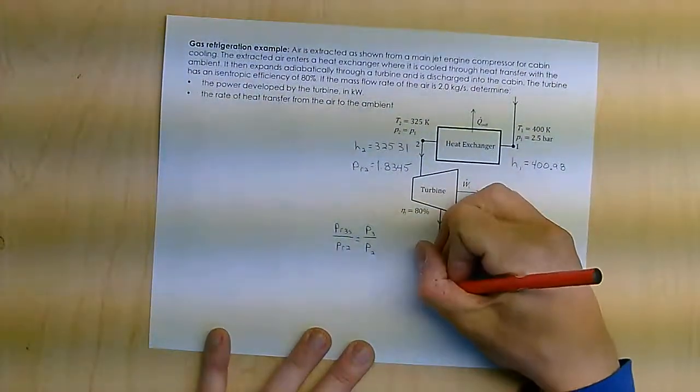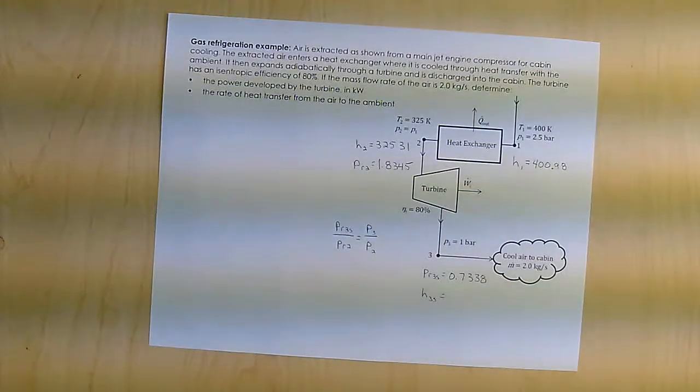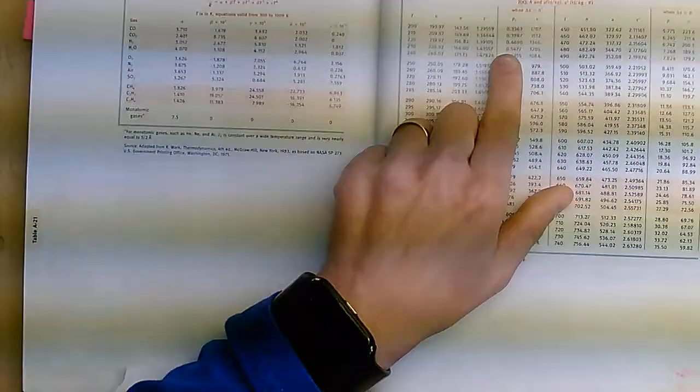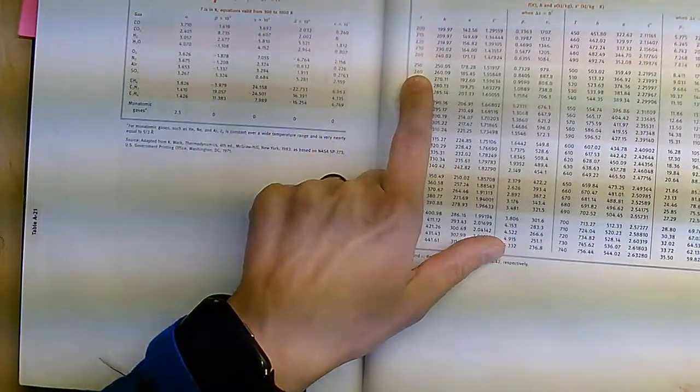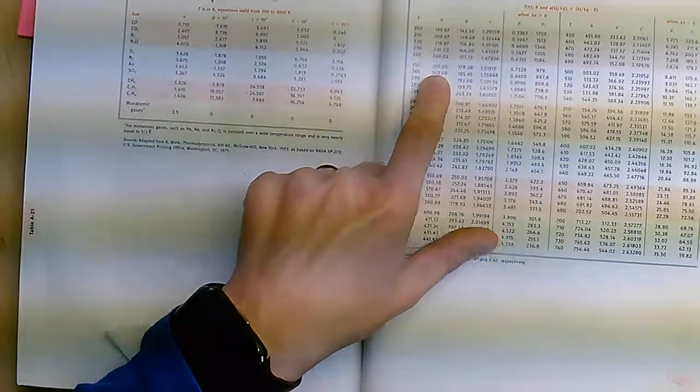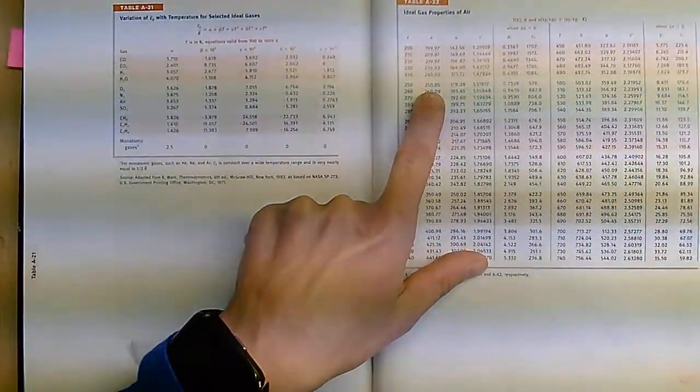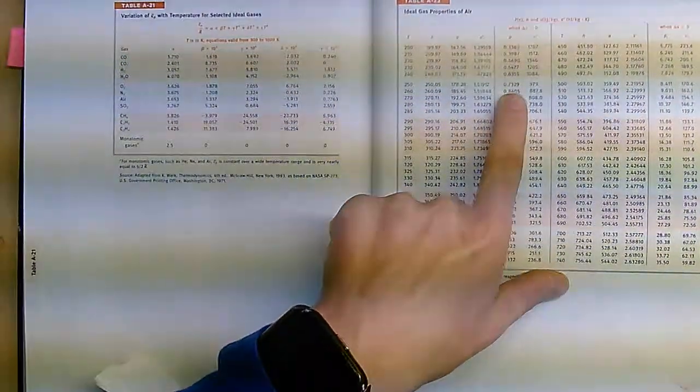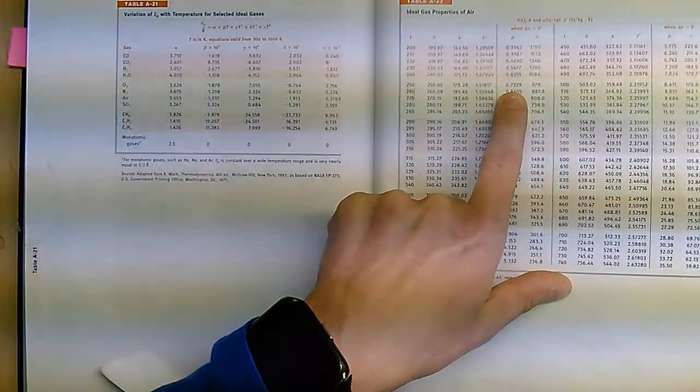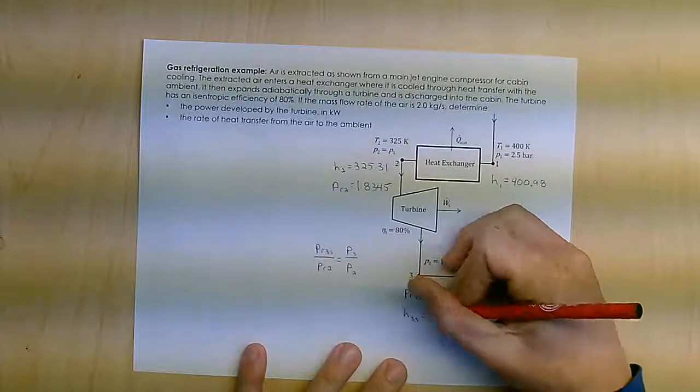So then from this, I can go ahead and look up H3S. So let's go ahead and do that, 0.7338. There it is. It's just a little bit above what I have here. So I can do my interpolation. It'll be just a smidge above the 250. So it's actually 250.13, because I'm at 0.7332. So just barely above that. And I get 250.13.